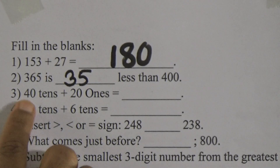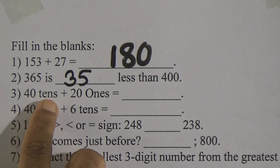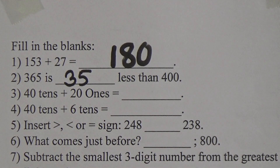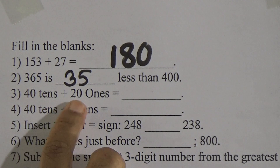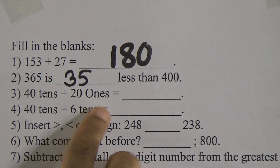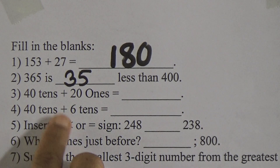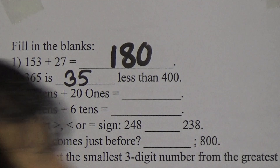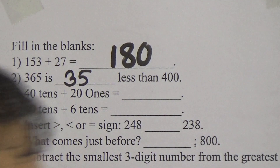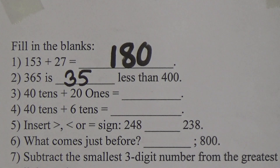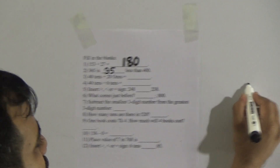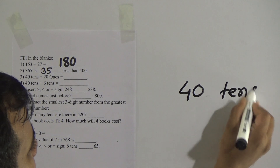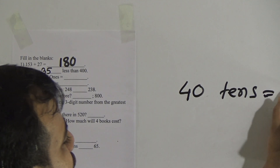Question number 3: 40 tens plus 21 equals how much? First find 40 tens equals how much, and 21 equals how much individually, then do the addition. 40 tens equals 400.